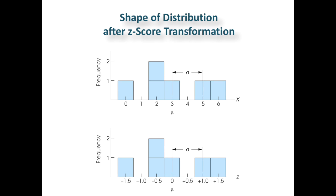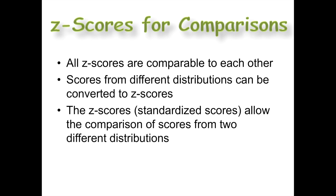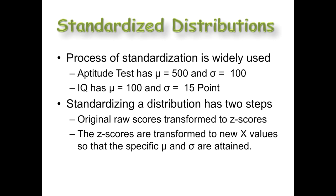The shape stays the same after the z-score transformation. The histogram doesn't look radically different — the axis has just been relabeled. So instead of the mean being three, now it's that uniform zero, and the standard deviation intervals are at one. All these scores are comparable to one another. The appeal of the z-score is that you can compare scores from different distributions and see your relative position. The z-score or standardized score allows comparison of scores from two or more different distributions. This process of standardization is widely used — it's how we get aptitude tests, IQ tests, the SAT, GRE, NCLEX, and all these different standardized tests.